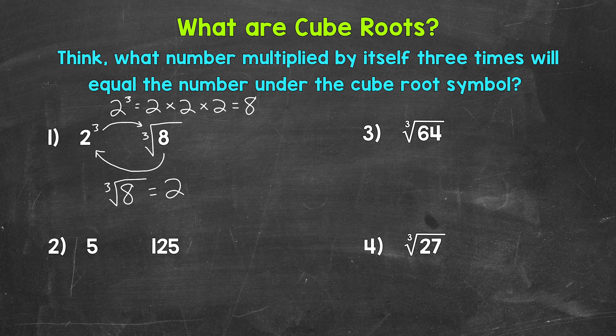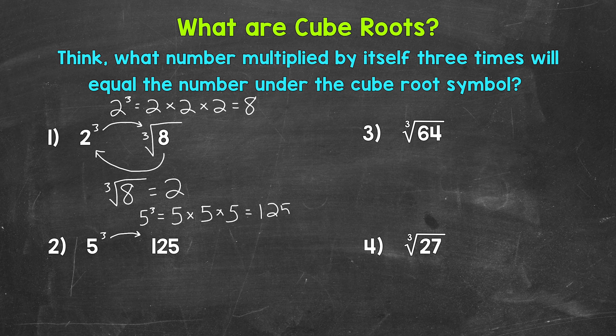Let's move on to number 2 and take a look at another example. We have 5 and 125. Let's start by cubing 5. So 5 cubed — that does equal 125. 5 cubed means 5 times 5 times 5, which equals 125. 5 times 5 equals 25, times 5 gives us 125.